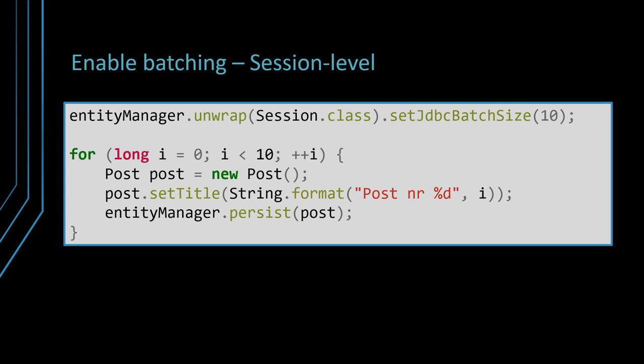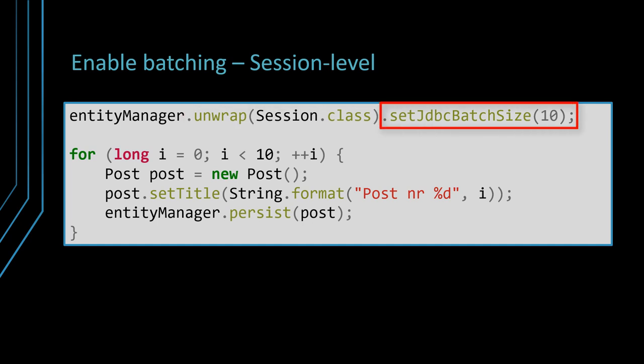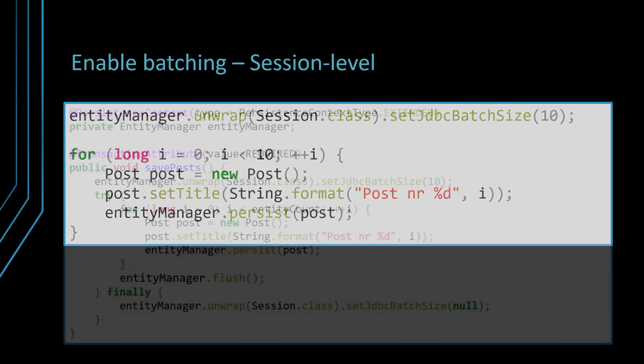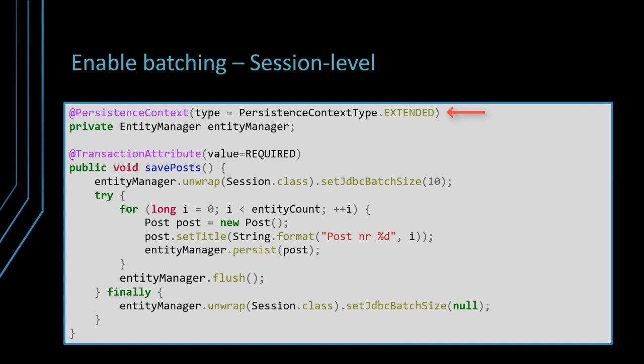Hibernate 5.2 adds support for session-level JDBC batching. Prior to this release, there was no way to customize the JDBC batch size on a per-business-use-case basis. This feature is really useful since not all business use cases have the same data persistence requirements. To set the JDBC batch size programmatically, you need to unwrap the EntityManager to a Hibernate Session and call the setJdbcBatchSize method with the desired batch size value. If the EntityManager uses a persistence context with extended scope, it is good practice to reset the custom JDBC batch size before exiting the current business method. By setting the session-level JDBC batch size to null, Hibernate will use the SessionFactory configuration the next time the extended EntityManager gets reused.